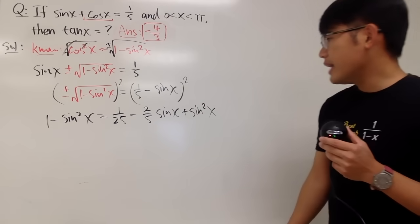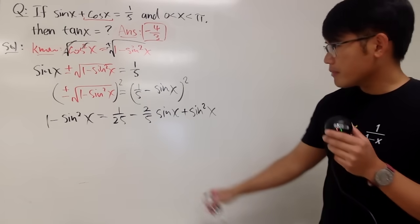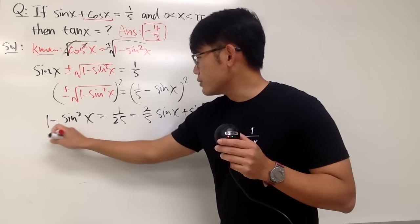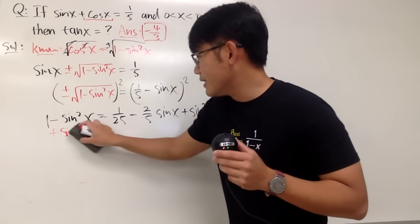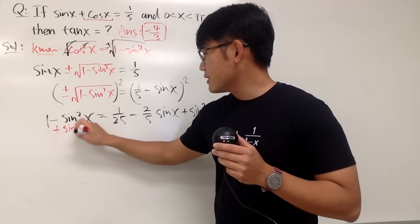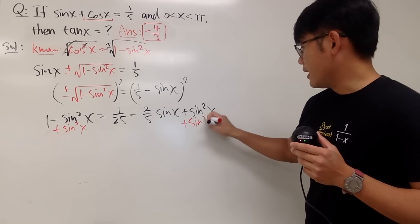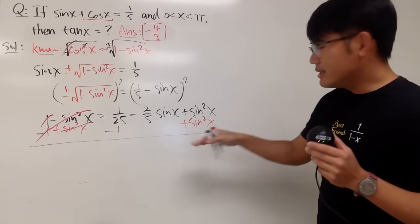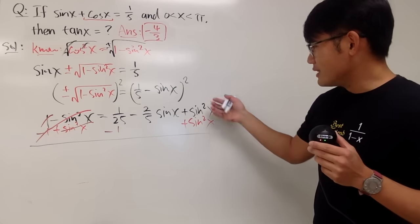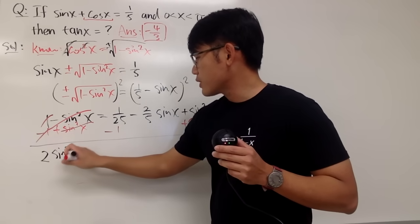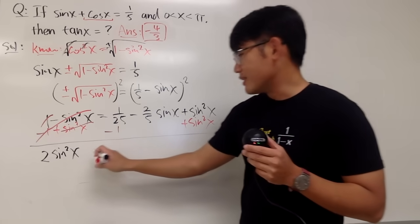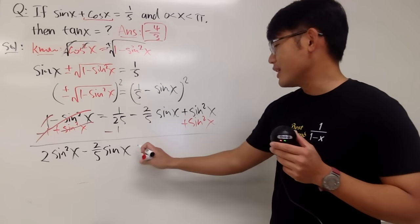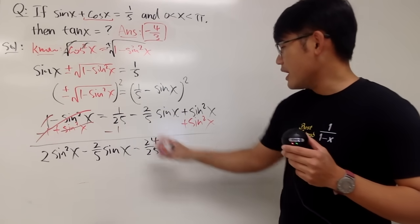This is actually a quadratic equation in terms of sine x. Let's put everything on one side and make the other side 0. Adding sine squared x to both sides gives 2 sine squared x. The middle term minus 2 over 5 sine x stays the same. Then 1 over 25 minus 25 over 25 gives minus 24 over 25. So we have: 2 sine squared x minus 2 over 5 sine x minus 24 over 25 equals 0.